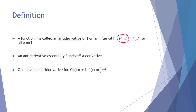For example, one possible antiderivative of f(x) = x — notice this is our lowercase function — is 1/2 times x squared. Because if you take the derivative of this antiderivative, you drop the 2, that cancels your 1/2, and you just get x. The reason I said 'one possible' is because the derivative of 1/2 x² + 5 or 1/2 x² − 1/2 is also x. I can add any constant and it would still be an antiderivative of x.